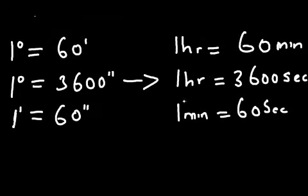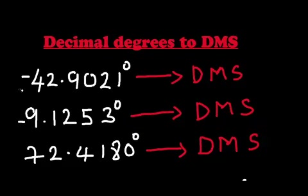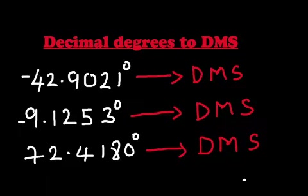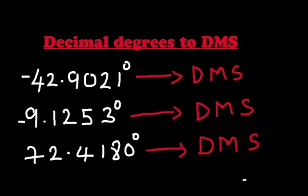That being said, let's get started with the first decimal degree, which is negative 42.9021 degrees. Let's convert it to degrees, minutes, and seconds.